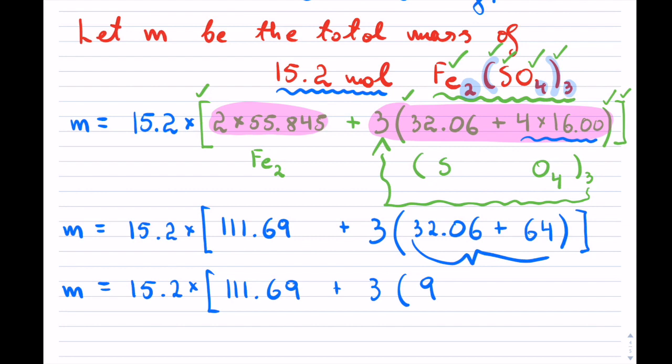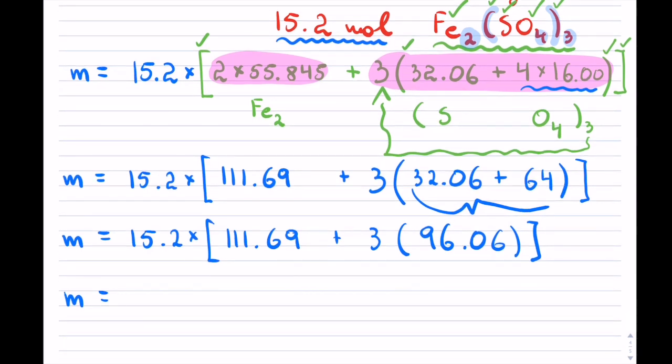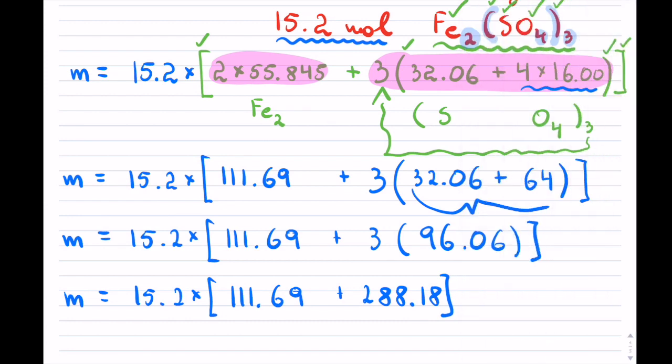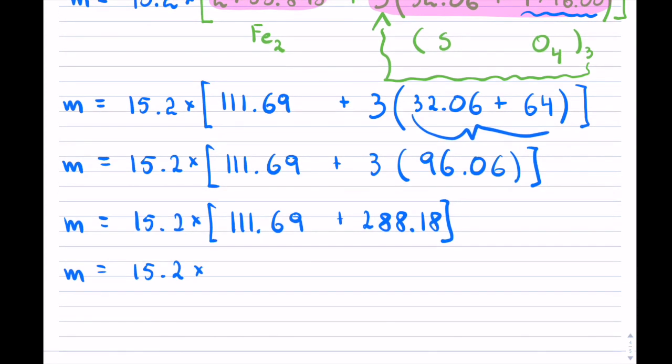And now I can just continue simplifying. You can use your calculator if you like. This I will pull the calculator for: 96.06. We have 288.18.